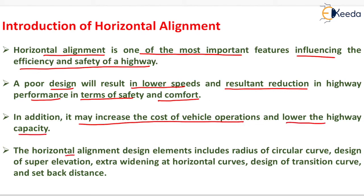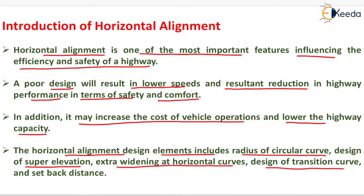The horizontal alignment design elements include the radius of circular curve, design of super elevation, extra widening at horizontal curves, design of transition curves, and setback distance.